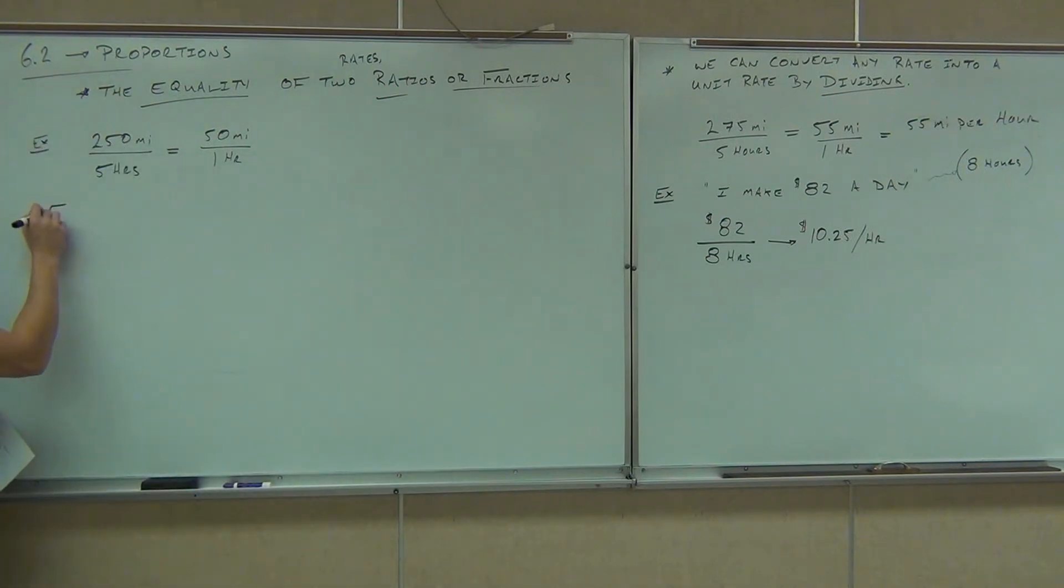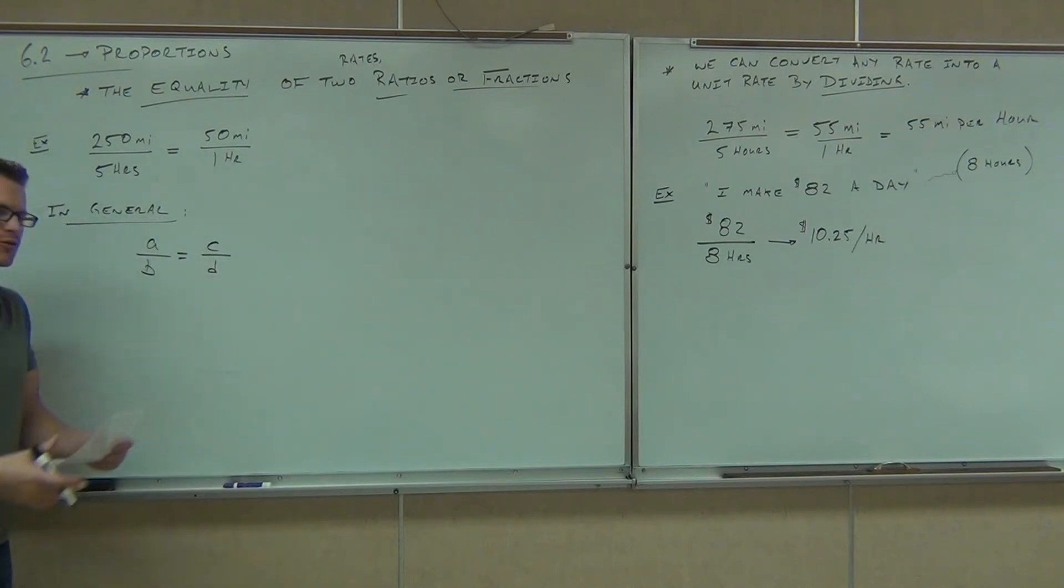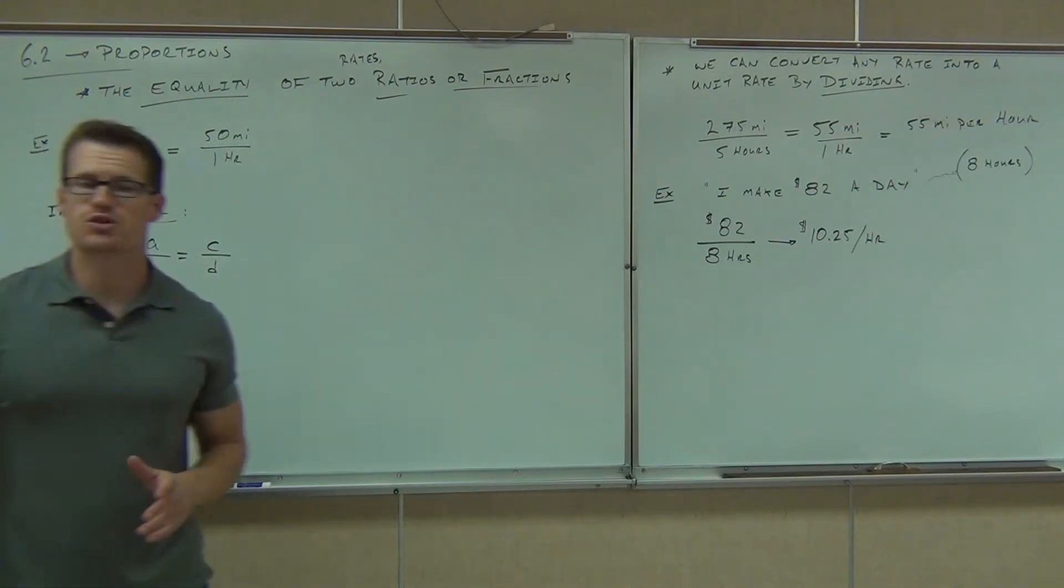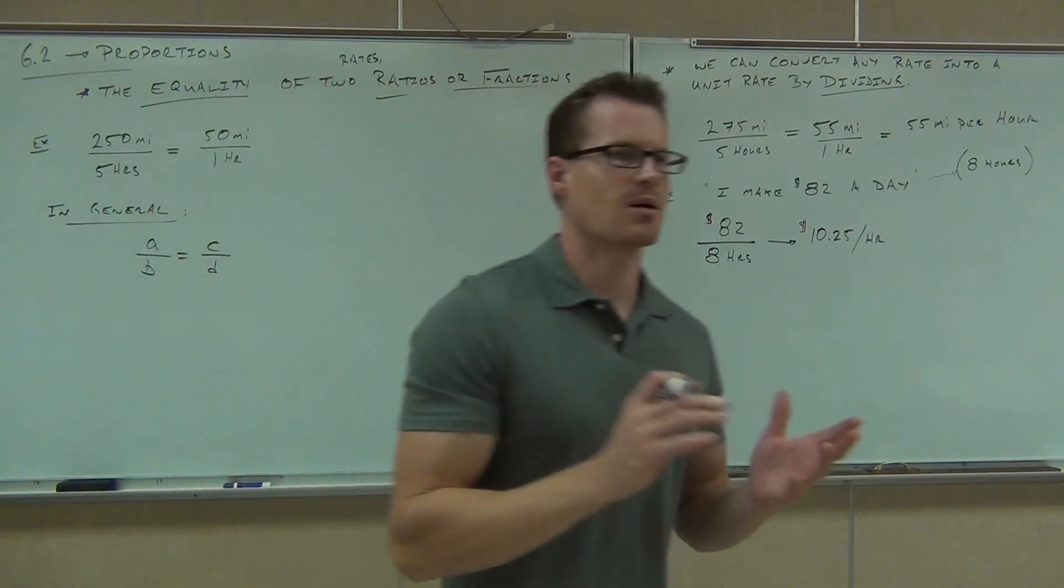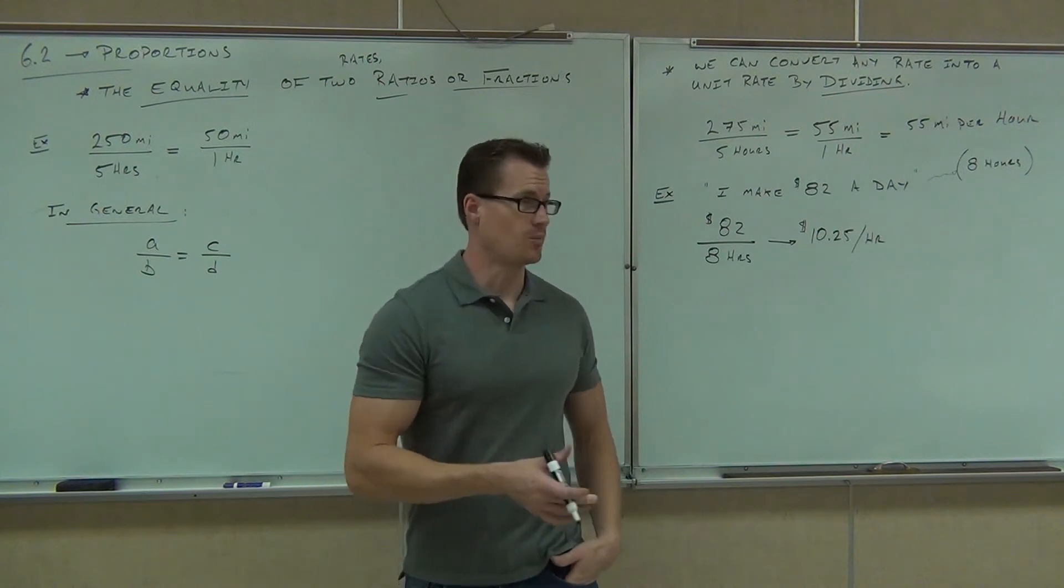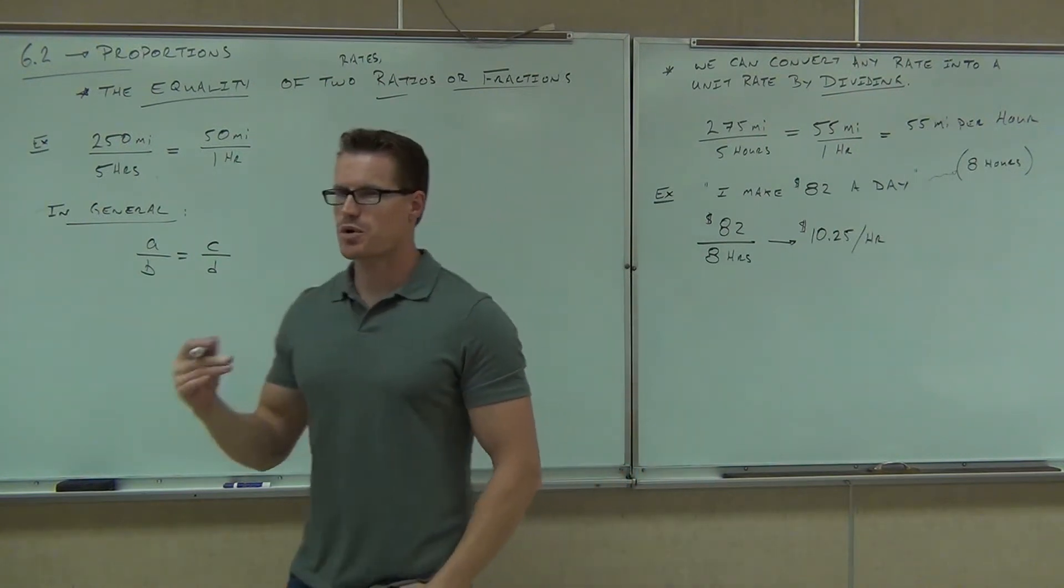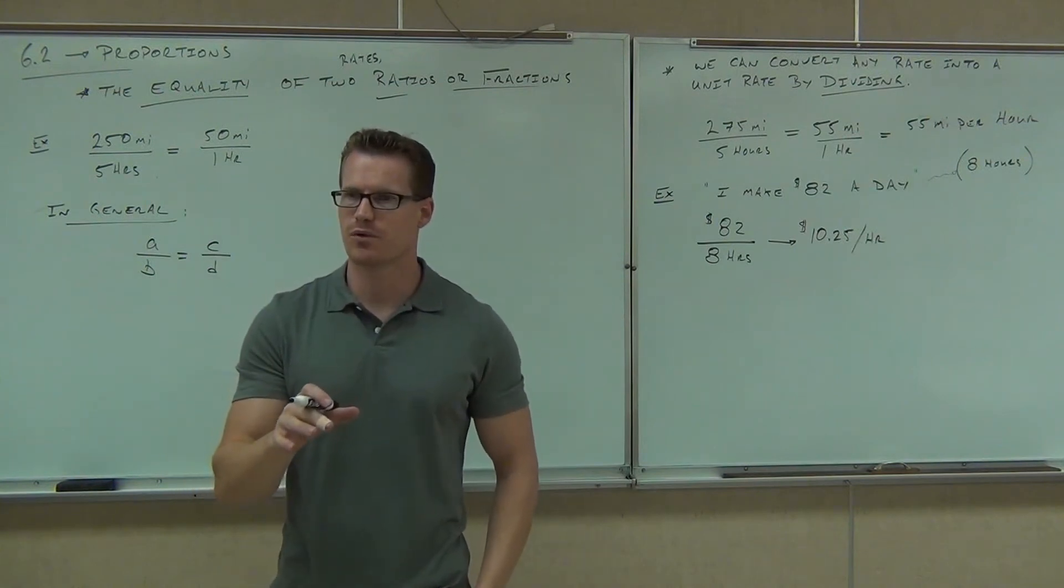In general, here's how proportions are going to look for you. In general, we simply have one fraction equal to another. So like A over B equals C over D. That's a proportion. Now, here is the amazing thing about proportions. This is going to allow us to solve equations pretty easily in just about five minutes. Check this out. Now, every single time you have a proportion, the cross product - have you ever heard of cross multiplication before? You ever heard of that?